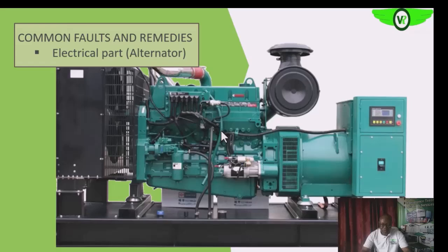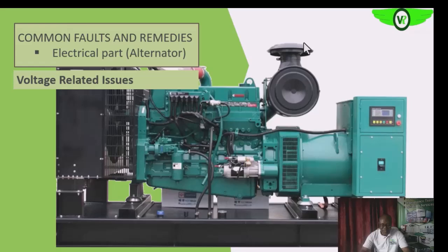We want to look at the electrical parts, some of the common problems, and how we can remedy these problems. We'll be looking at the alternator end of the engine and what related issues there are — some of the common problems associated with the electrical parts of generators.